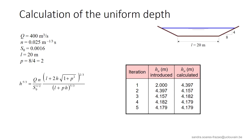An example is given for the trapezoidal channel illustrated. The discharge is 400 cubic meters per second, and we look for the corresponding water depth. The first guess of the uniform depth is introduced in the right-hand side of the equation, and the result is the calculated value in the right column of the table. We then introduce this value again in the equation, find a new value, and see that the iterations rapidly converge towards the solution that is slightly above 4 meters.